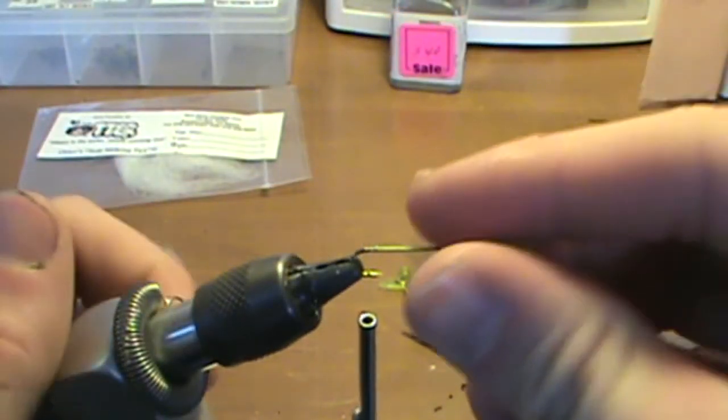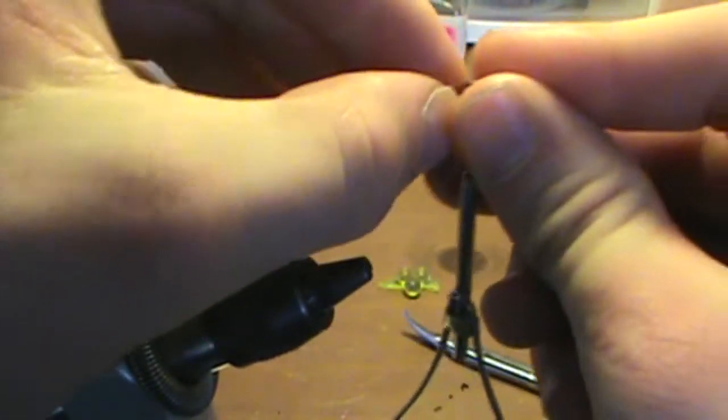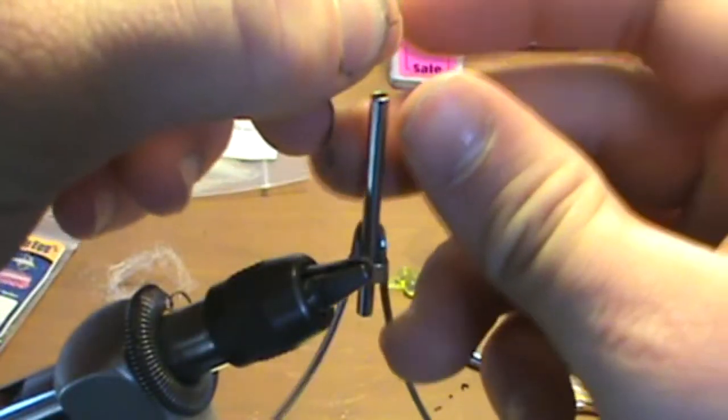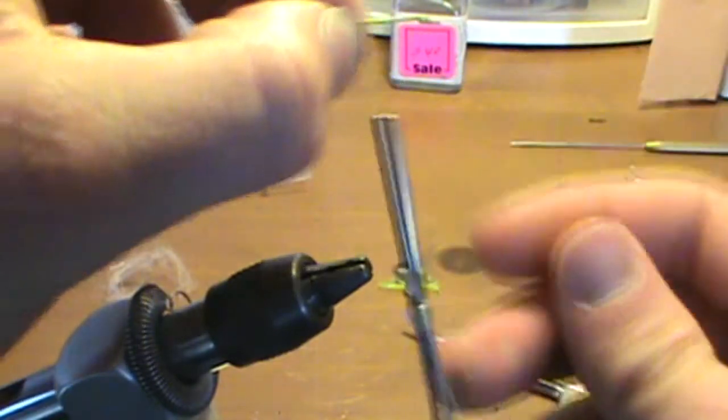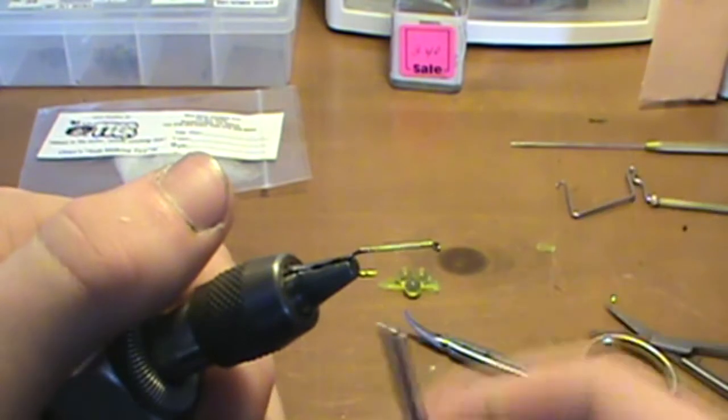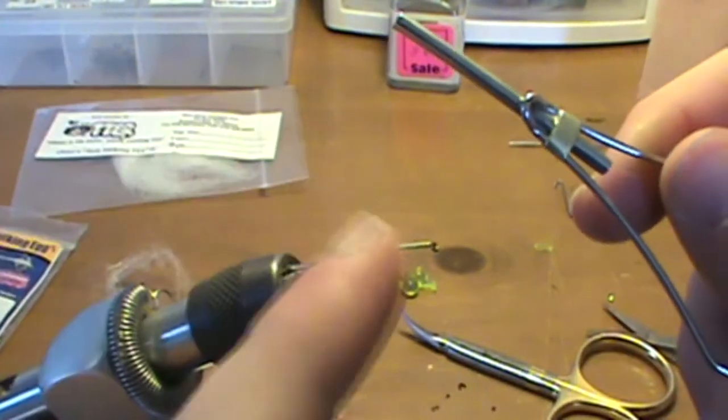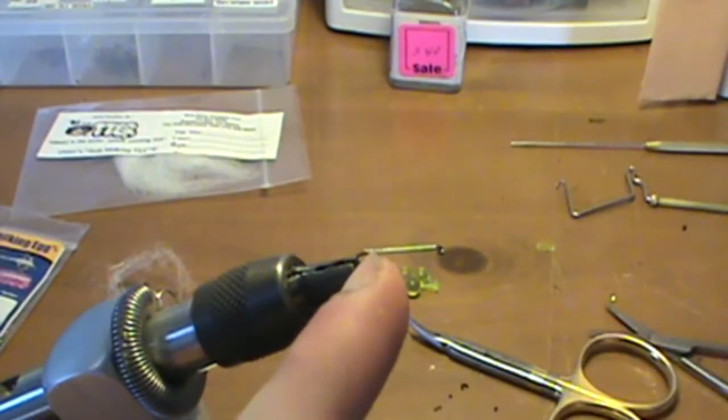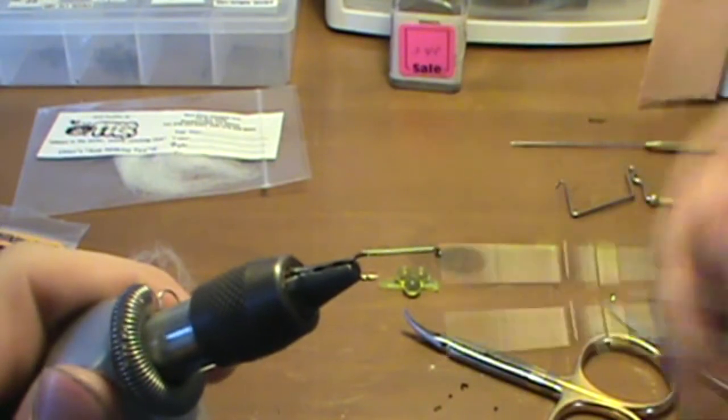Now you're going to need to take the fly out of the vise for this. But actually I've got to put it back in. You don't want your thread to be back here, you want to wrap it up to the front again.